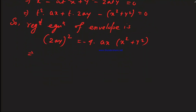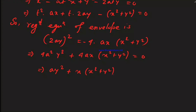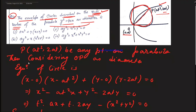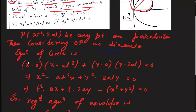Expanding: 4a²y² = -4ax(x² + y²). Cancelling 4 from both sides: ay² + x(x² + y²) = 0. Therefore option 3 is the right option.